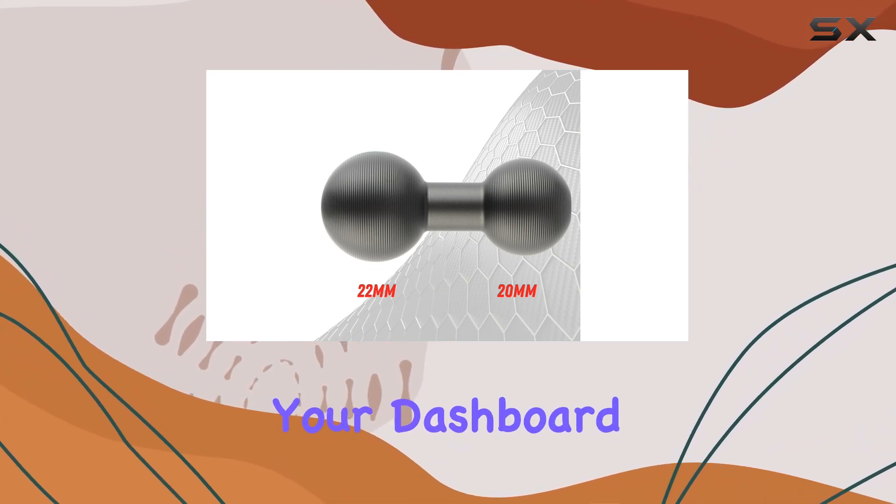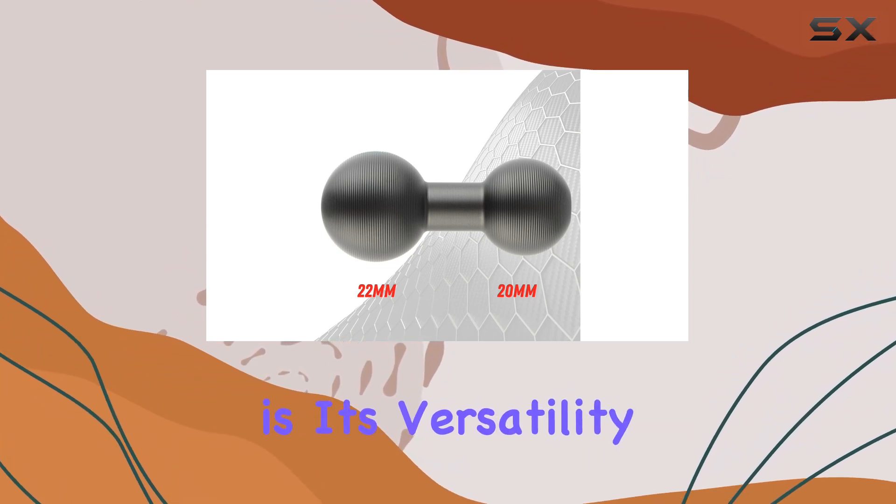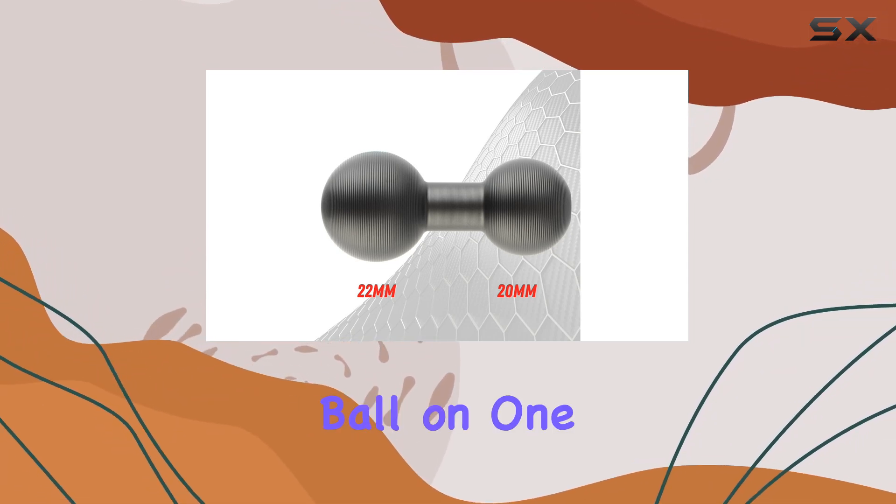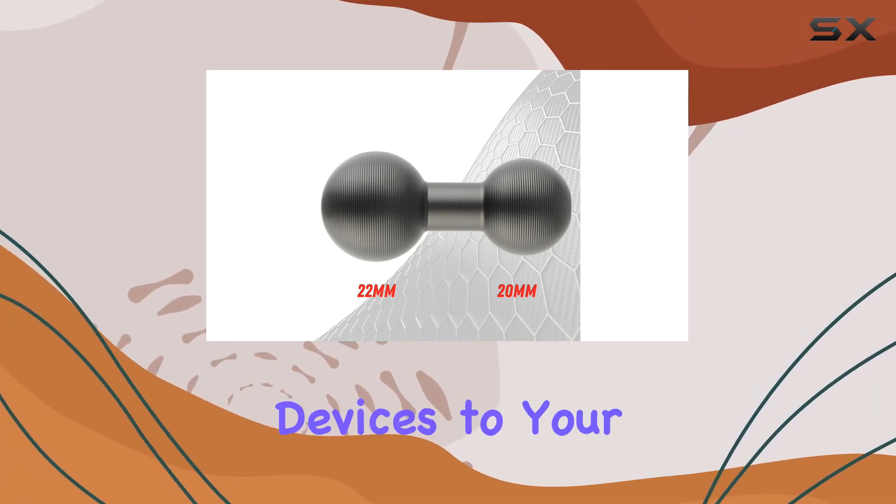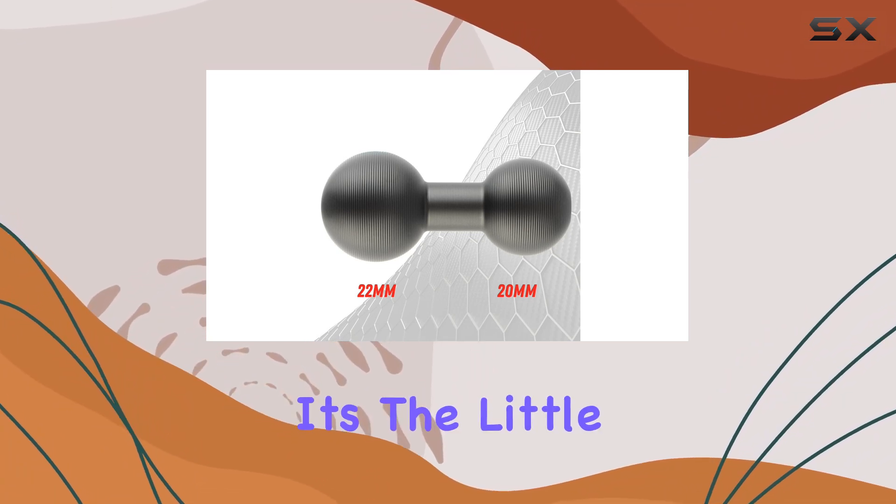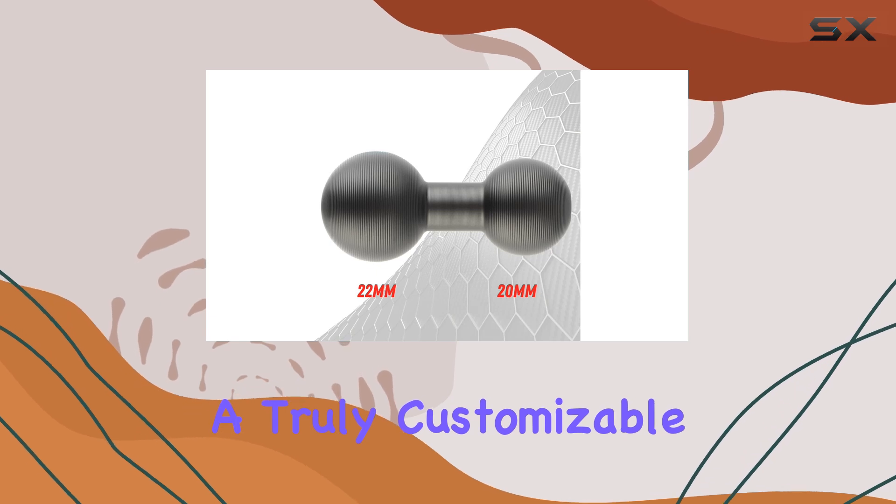One of the standout features of this connector is its versatility. With a 20 millimeters ball on one end and a 22 millimeters ball on the other, you can easily connect third party devices to your bullet point mounting arm. It's the little details like this that make all the difference in creating a truly customizable setup.